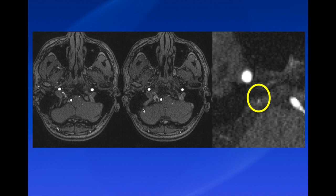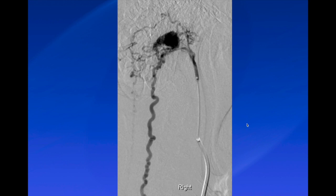On MR angiography, a branch of the ascending pharyngeal artery is seen going into the hypoglossal canal, with a dilated vein in the hypoglossal canal and within the osseous substance of the condyle. There is also a vessel running along the clivus supplying the fistula. The conventional angiogram of the ascending pharyngeal artery demonstrates the neuromeningeal trunk entering the fistula in the hypoglossal canal and draining into the anterior and posterior spinal veins, causing medullary venous congestion and cervical myelopathy.